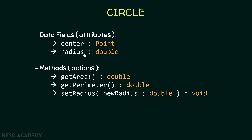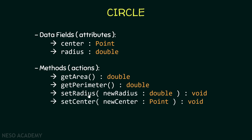The setRadius method is used to change the value of the radius of the circle to equal the value passed as an argument, and we don't return anything from this method, so its type is void. Finally, we want a setCenter method that takes a new center, which is a Point, and assigns the circle's center to equal the value passed as an argument.